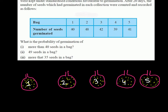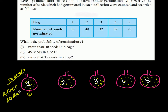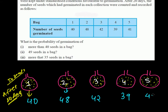These are my bags, and in each bag there were 50 seeds. Now out of these 50 seeds, after 20 days we got the following results: in bag 1, 40 seeds germinated; in bag 2, 48 seeds germinated; in bag 3, 42 seeds germinated; in bag 4, 39 seeds germinated; and in bag 5, 41 seeds germinated.